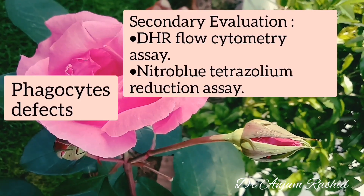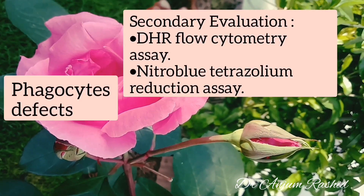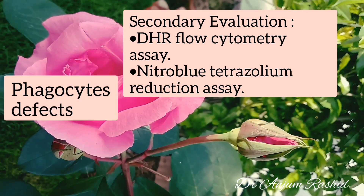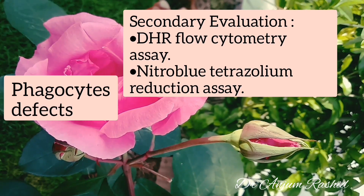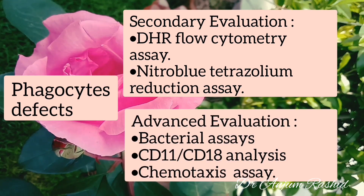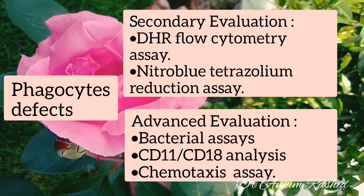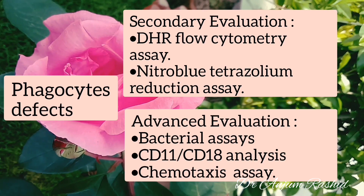Secondary evaluation in phagocytic defects includes dihydrorhodamine flow cytometry assay and nitroblue tetrazolium reduction assay. Advanced evaluation includes bacterial killing assays, CD11/CD18 analysis, and chemotaxis assay.